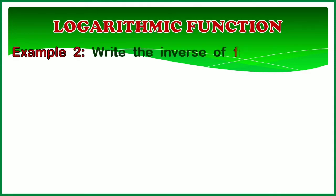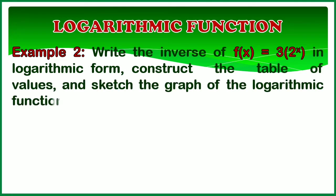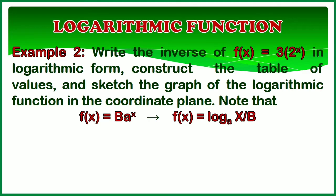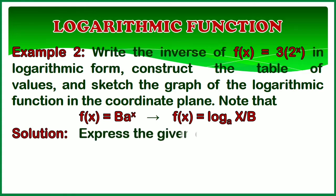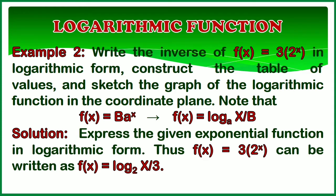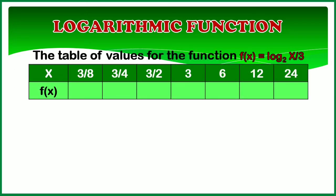Next, let's have an example: write the inverse of f(x) = 3 times 2 to the x power in logarithmic form, construct the table of values, and sketch the graph of the logarithmic function in the coordinate plane. Note that f(x) = b times a to the x power can be written as f(x) = the logarithm of x over b to the base a. For the solution, f(x) = 3 times 2 to the x power can be written as f(x) = the logarithm of x over 3 to the base 2. Here is the table of values for the function f(x) equals the logarithm of x over 3 to the base 2.